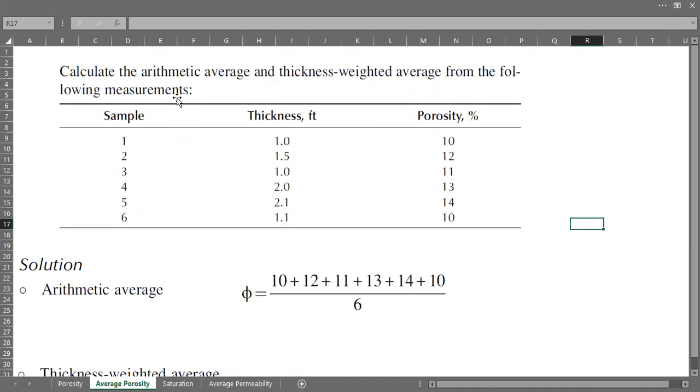This is our case: calculate the arithmetic average and thickness-weighted average from the following measurements. We have six samples with their own thickness and porosity, from sample one down to sample number six.